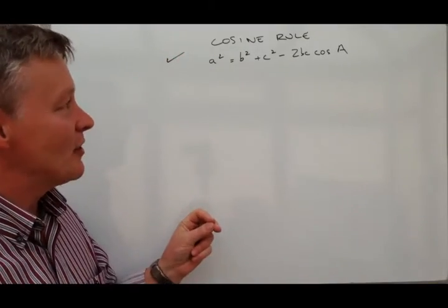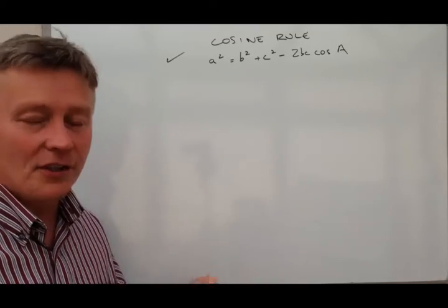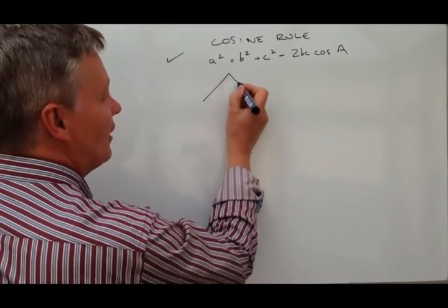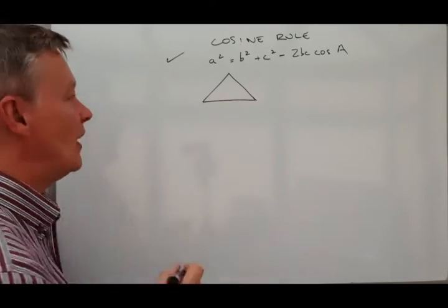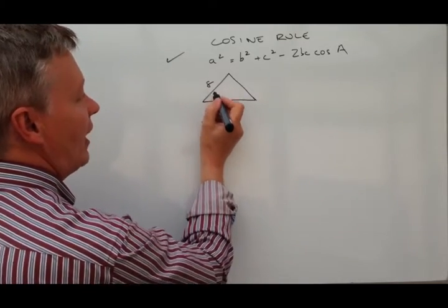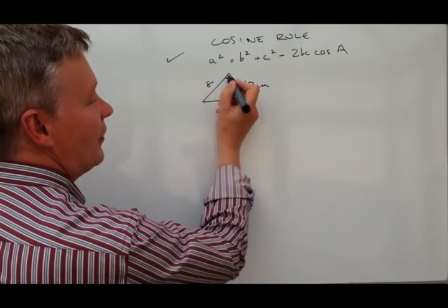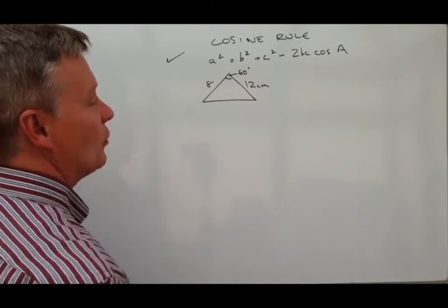Now what that refers to is, let's say that we've got a triangle, and cosine rule in this particular instance relates to any type of triangle. So typically you might be given something like that, and let's say this will be 8cm, and this would be 12cm, and you're given this angle, and let's say this angle is 60 degrees.